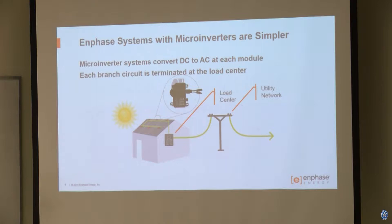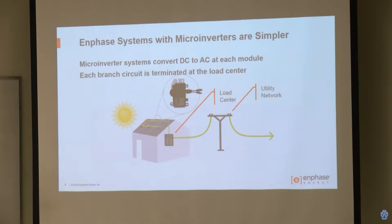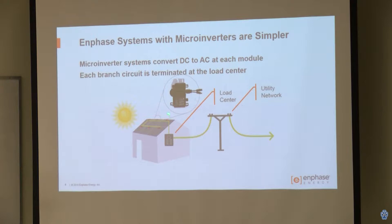Here's how Enphase works: each solar module on the roof has an inverter associated with it — a small inverter, about four by six inches and an inch and a half thick. It converts the DC power from each module and generates AC power. Those are connected in parallel and all that power comes down to the load center, where you have your circuit breakers and branch circuits. The utility network also connects there through the meter. It's this interaction between the utility network and the PV that we're going to focus on.